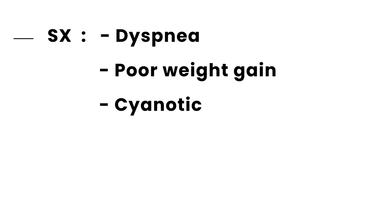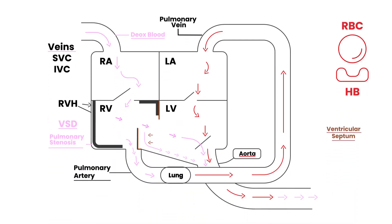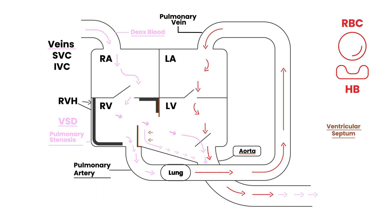It's not 100% deoxygenated blood — it's a mixture. As a result, they can get these spells called tet spells — hypoxemic spells. These spells are triggered when the child cries or is being fed, because during those situations the child can develop hypercyanosis. You just have to understand what's happening with this aorta pumping out a mixture of oxygenated and deoxygenated blood.